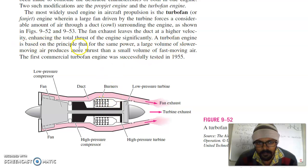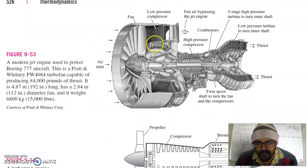A turbofan engine is based on principle that for the same power, a large volume of slower moving air produces more thrust than a small volume of fast moving air. We use this fan, so more amount of air will come into this engine and the larger amount can produce a larger mass flow rate of air. Also, we can produce same thrust as compared to lesser mass with the larger velocity. A turbofan engine is based on this principle. The first commercial turbofan engine was successfully tested in 1955.